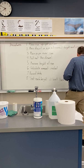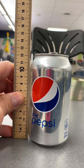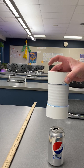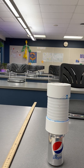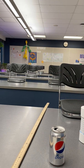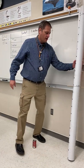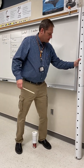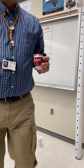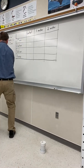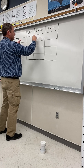The height of the can beforehand is 12.2 cm. For the control, we're dropping the weight from zero centimeters, so the height remains 12.2 cm and the amount crushed is zero. Test one at one meter: place the pipe over the can, pull out the dowel, crush the can. The height of the can after the first test at one meter is 8.5 cm.